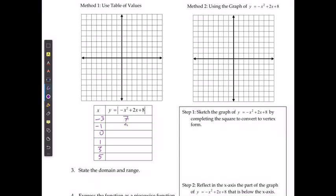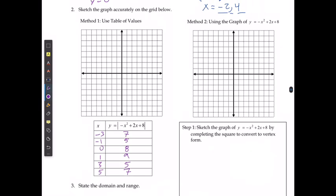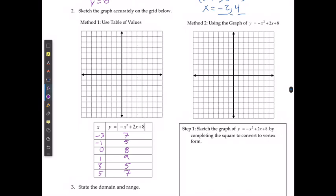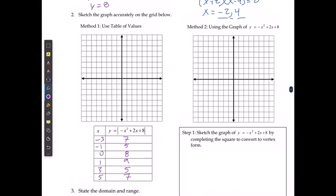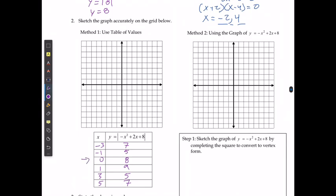Substituting these values in for x and solving for y gives: 7, 5, 8, 9, 5, and 7. So I know my x-intercepts — we already have those — and my y-intercept. I have the points negative 2 and 0, and positive 4 and 0. I already have my intercepts.